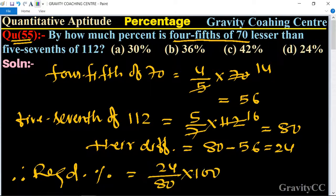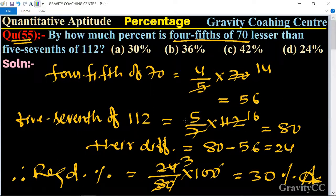So here zeros cancel and 8 into 3 is 24, so it is equal to 30%. This is the required answer, so option A is the correct answer.